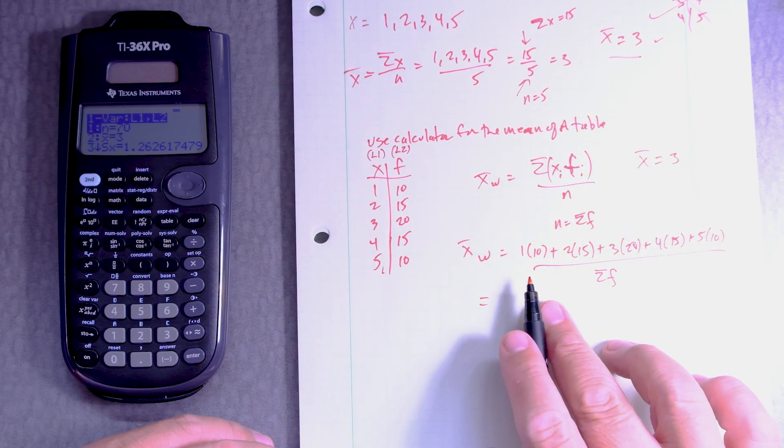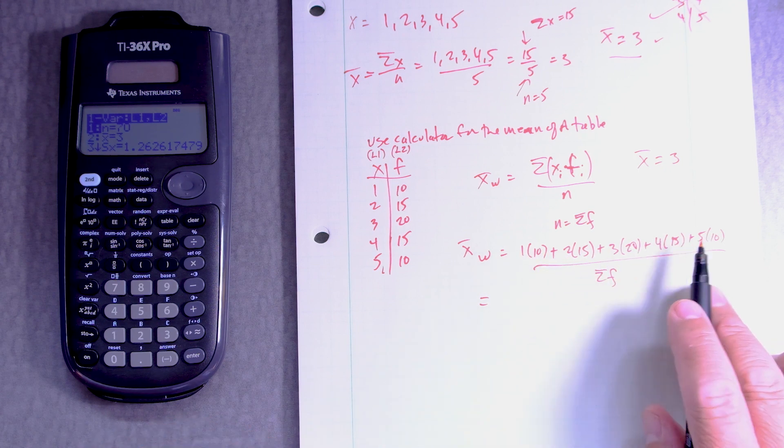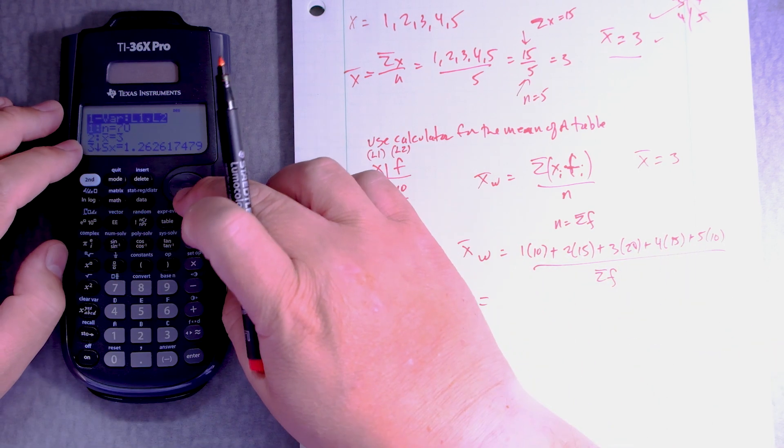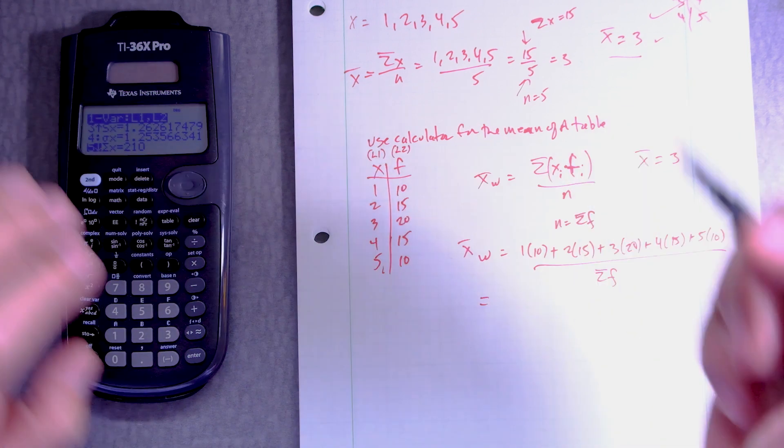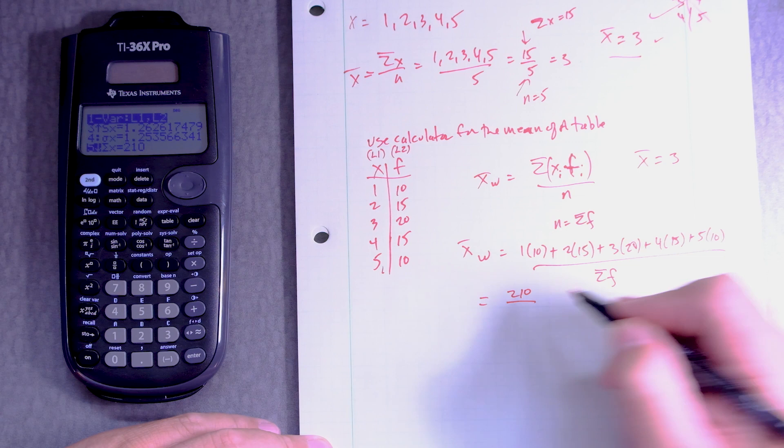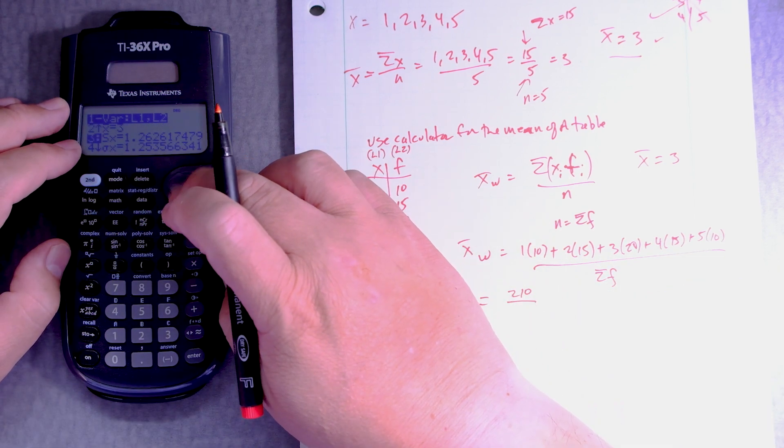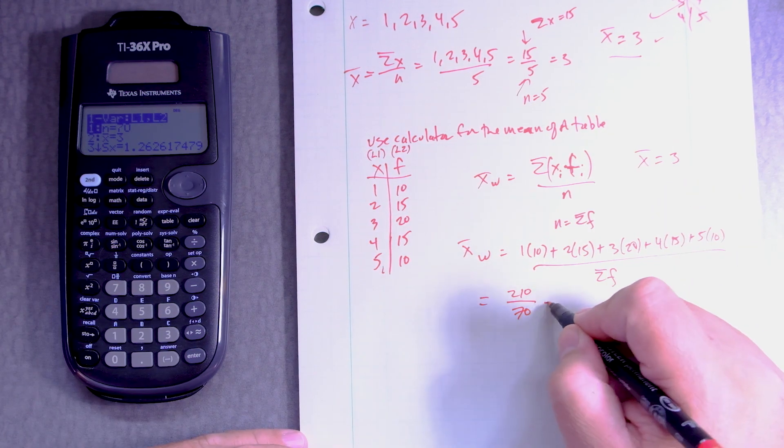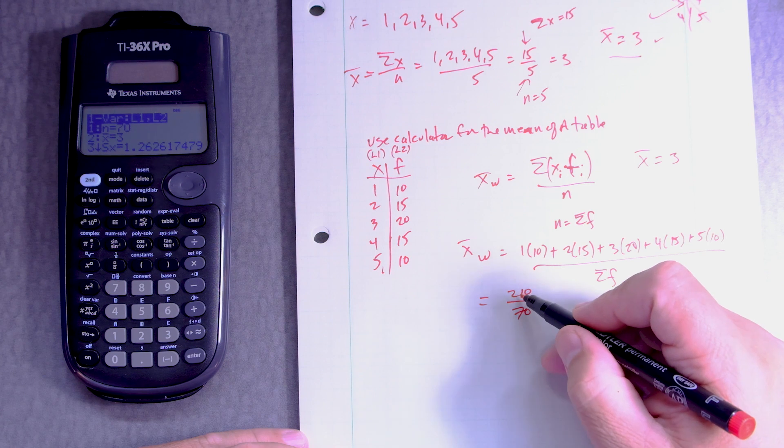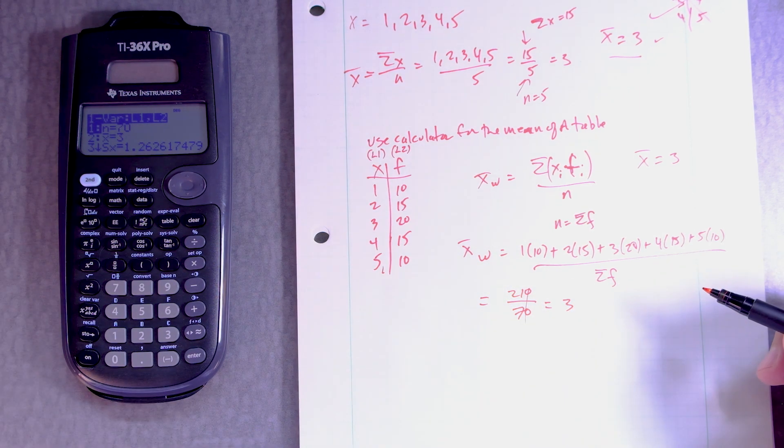But we can also figure out some other information too like the sum of this. The sum is over here. See the sum of x, 210 divided by the total. Was it over here? And it's 70. See that? And 7 goes into 21 three times, and get rid of the zeros. So this is right.